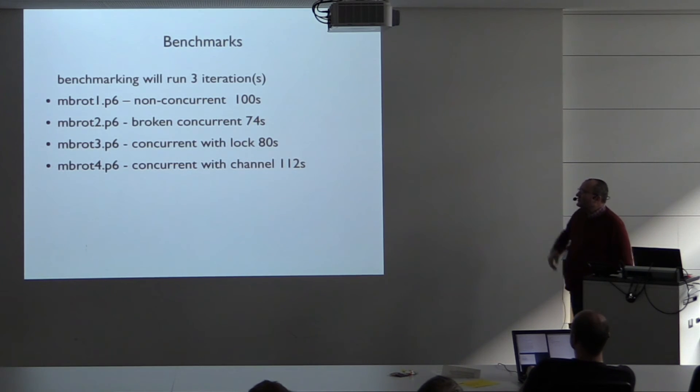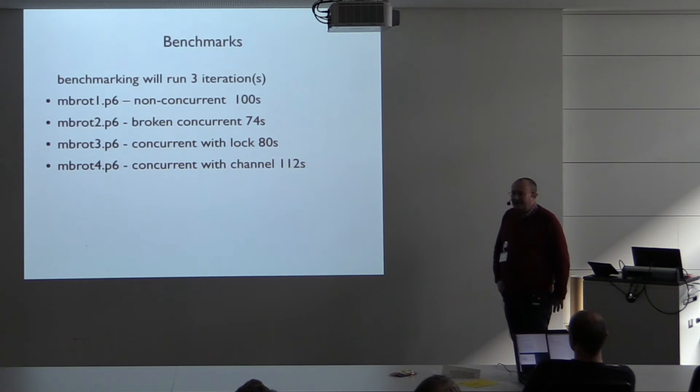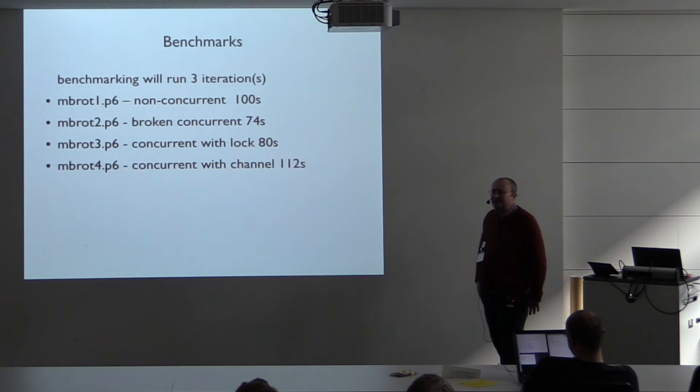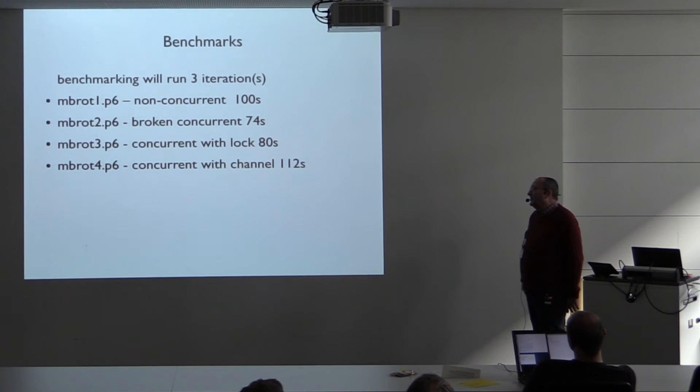To summarize the benchmarks. The basic non-concurrent. The other thing was that I used a Perl 6 benchmarking module. That worked perfectly all right after I actually committed a pull request to fix it. The first one's 100. You can see that the broken concurrency, that's the example that plots a corrupted, incorrect Mandelbrot and crashes the Mac. That's considerably faster. And adding the locking, which fixes it, is a bit, the third case is significantly faster, even on a not very good system. However, I was a bit disappointed to discover that with channels, it was actually slower, which isn't really what I expected.